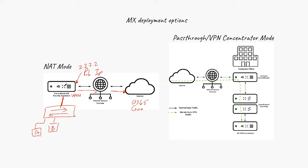What you can do in NAT mode is create your LAN, and in your LAN you can create your own IP addresses and your own VLANs. NAT mode is going to translate the LAN IP addresses — the private IP addresses you've created, like VLAN 1, 2, and 3.